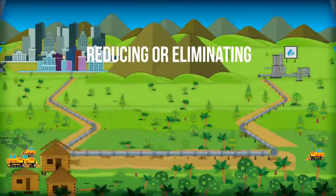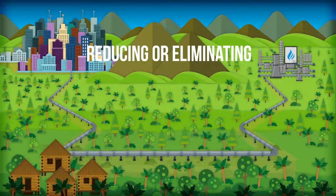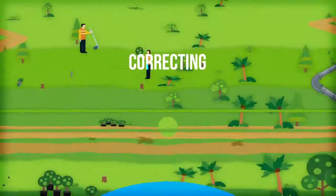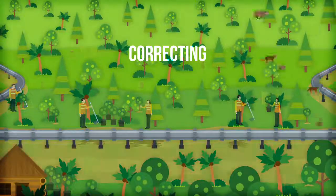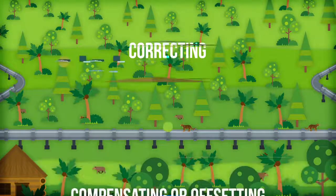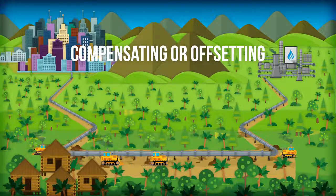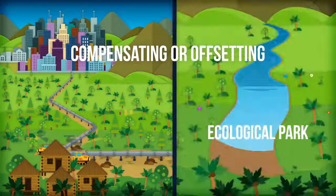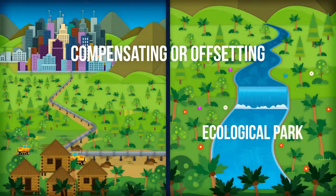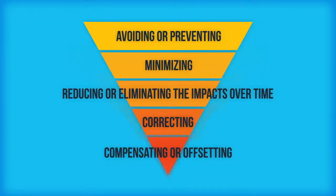Reducing or eliminating the impacts over time through protection or maintaining works over the lifetime of the project. Correcting the impact through repairing, rehabilitating, or restoring the affected environment or socioeconomic components. And compensating or offsetting any negative residual impacts by taking actions designed to generate additionalities by providing alternative resources for the environment or affected persons.